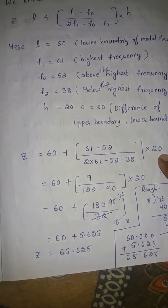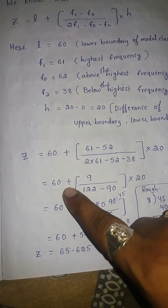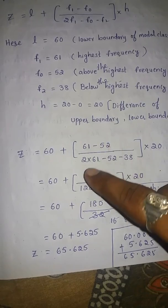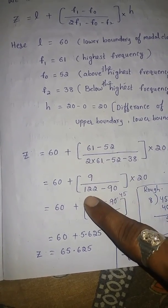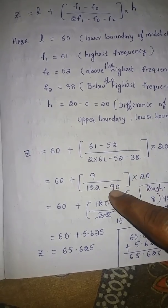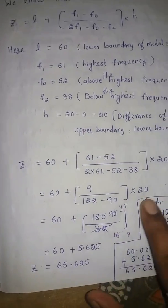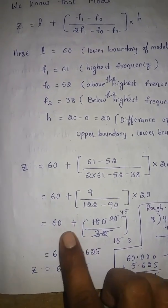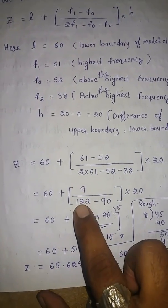60, 61 minus 52 the difference is 9. Here 2 into 61 it is 122 minus 52 minus 38, together minus 90, both having the same sign, add and keep the sign same sign into 20.